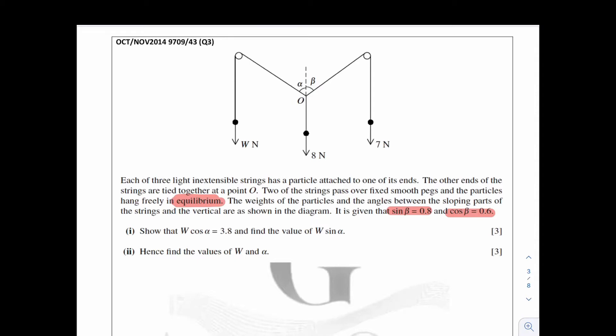Before we start solving the question, let's have a look at the diagram. There are two different strings here, which means there should be two different tensions. Look at the point that maintains everything in equilibrium, which is point O. This point maintains all the forces in equilibrium.